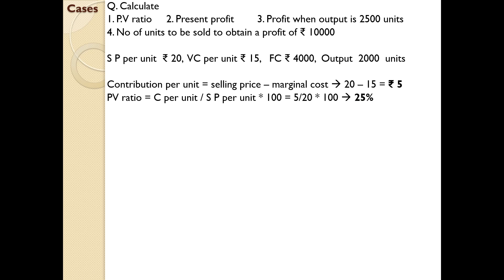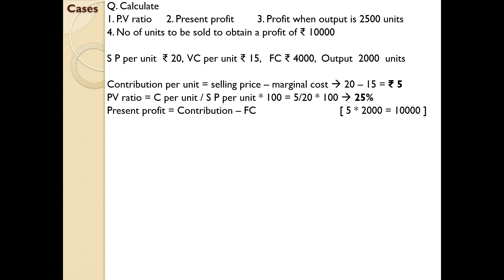For present profit: contribution minus fixed cost. Contribution per unit is 5, total units is 2,000, so total contribution is 5 into 2,000 = 10,000. Present profit equals 10,000 minus fixed cost 4,000 = 6,000.